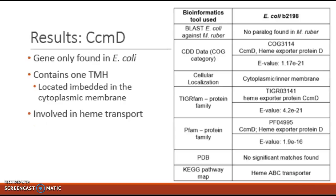The last gene in the study system is CCM-D. The BLAST-P for B-2198, which codes for CCM-D, did not come up with any significant results for M. Ruber. This means that there is no paralog for CCM-D within the Myothermis Ruber genome. This may be due to a deletion of the gene or a number of other factors that resulted in a missing or non-functional CCM-D gene in M. Ruber.